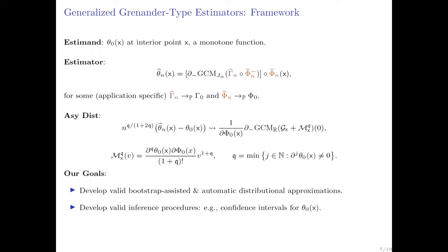That is the starting point of where we come. This is a long detour to tell you where the literature was a couple of years ago and how these generalized monotone-type estimators came about. In this generalization I am allowing for Q greater than 1 — recall Q is the index coefficient determining the first non-zero derivative of the mean, which not only changes the rate of convergence but also changes the law altogether because the mean changes along the way. What are the goals for today? We are going to develop a valid, bootstrap-assisted, and automatic distribution approximation for this law, and use it to construct asymptotically valid confidence intervals.